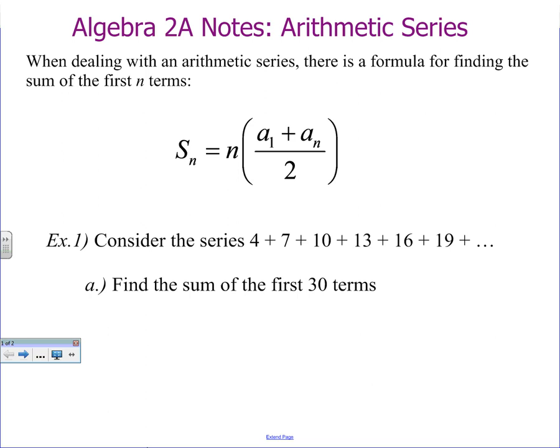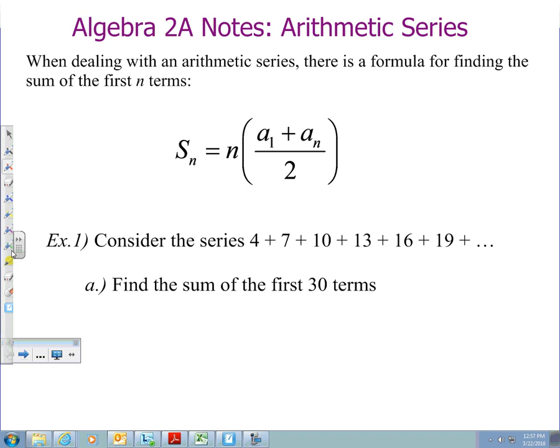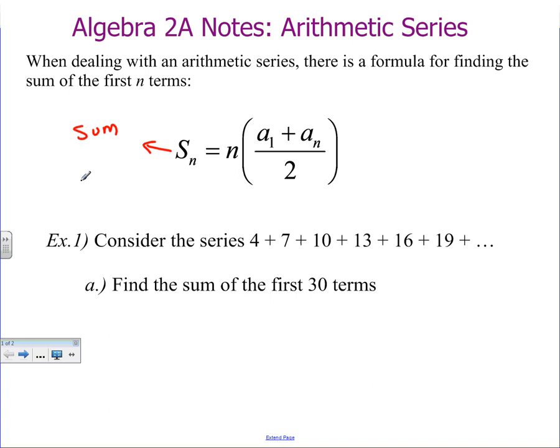What we're going to do first is we're going to label the parts of the formula. On the left side, it says S_N, and the S stands for sum, so that means we're going to be adding stuff up. Sum of N terms. So N is how many terms we're trying to add up. Like in this case, when we want to find the sum of the first 30 terms, that means my N is 30. If I wanted to find the sum of the first 100 terms, then N would be 100. This is really like the answer.